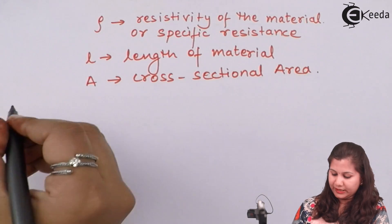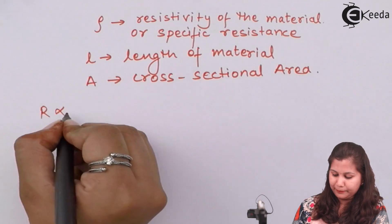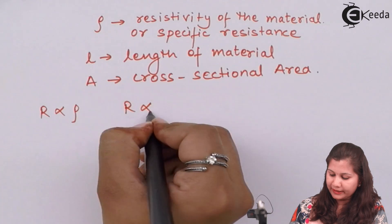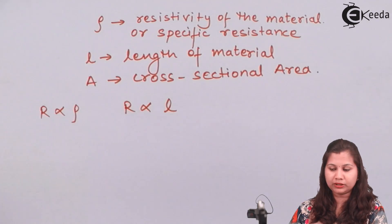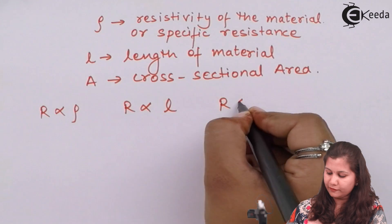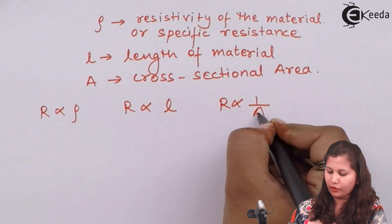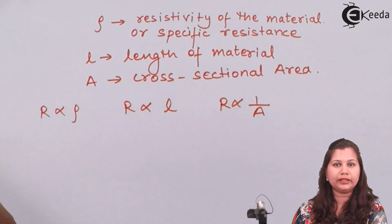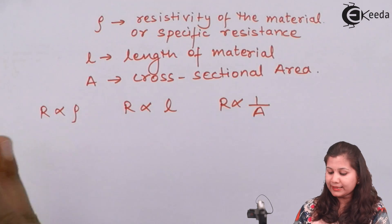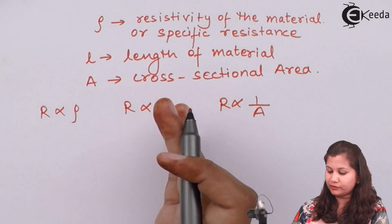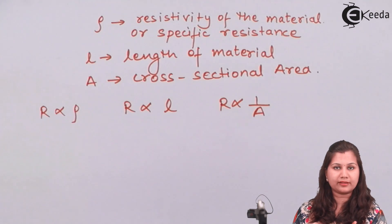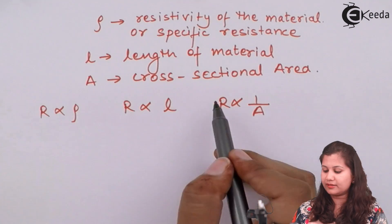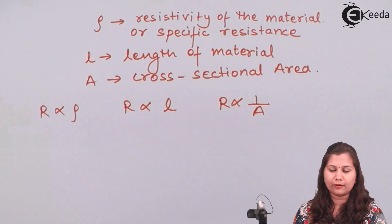From that formula you can see that R is directly proportional to resistivity, R is also directly proportional to the length of the conductor, and R is inversely proportional to the cross-sectional area. So the formula becomes R = ρL / A. As the specific resistance or the length of the material increases, the resistance also increases; and if the cross-sectional area increases, the resistance decreases.